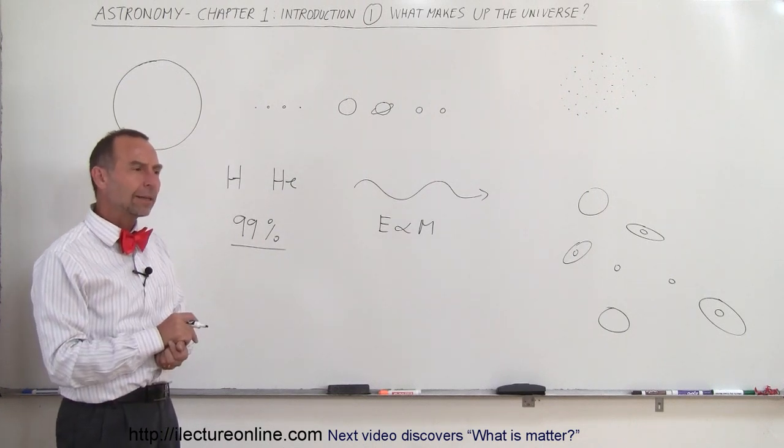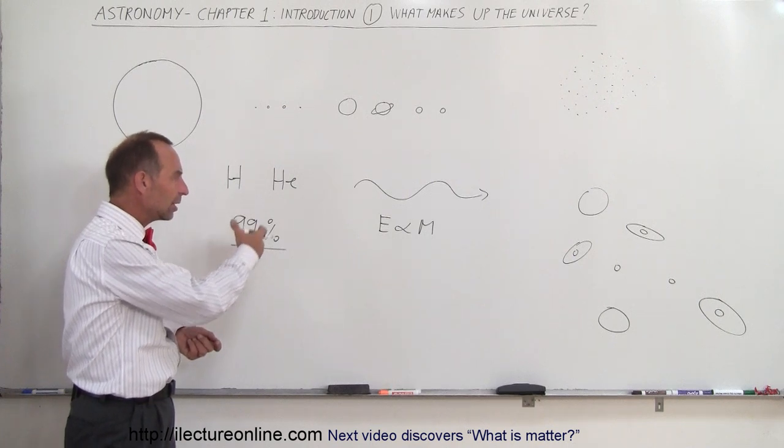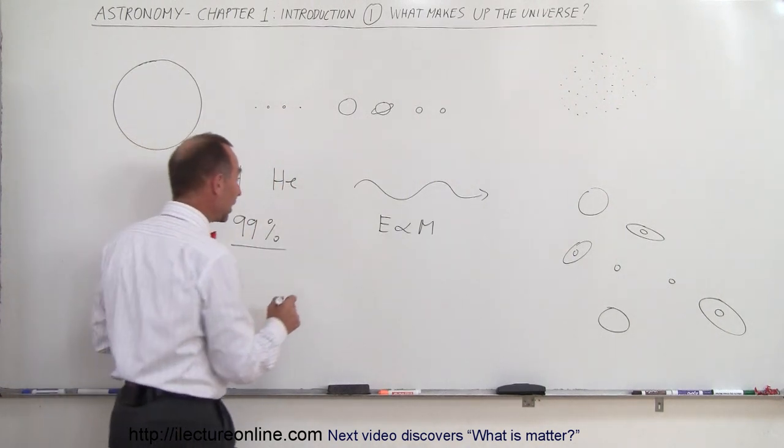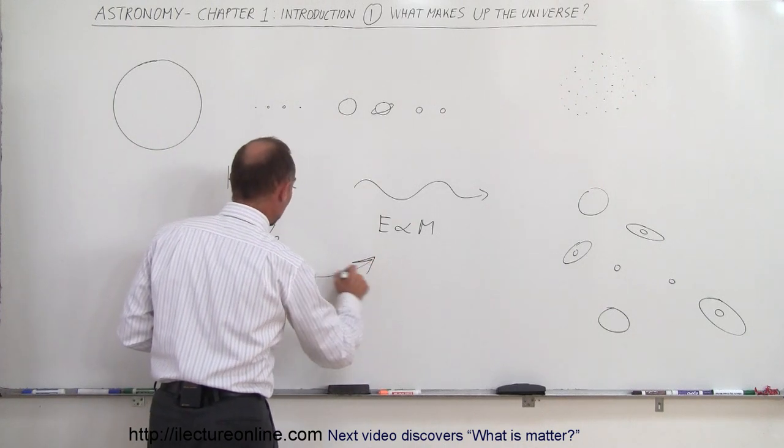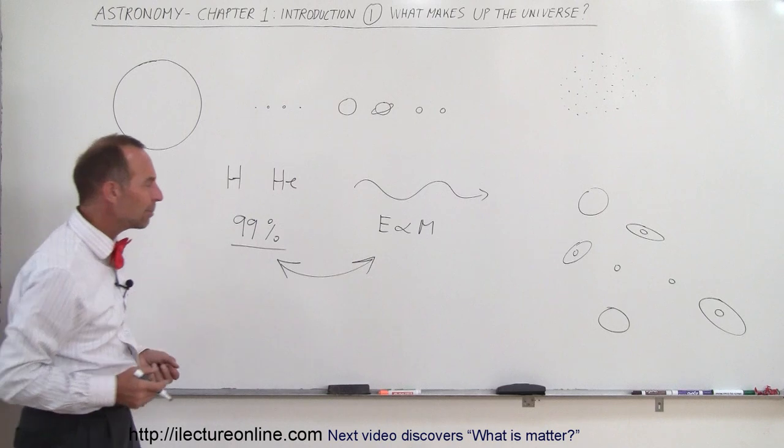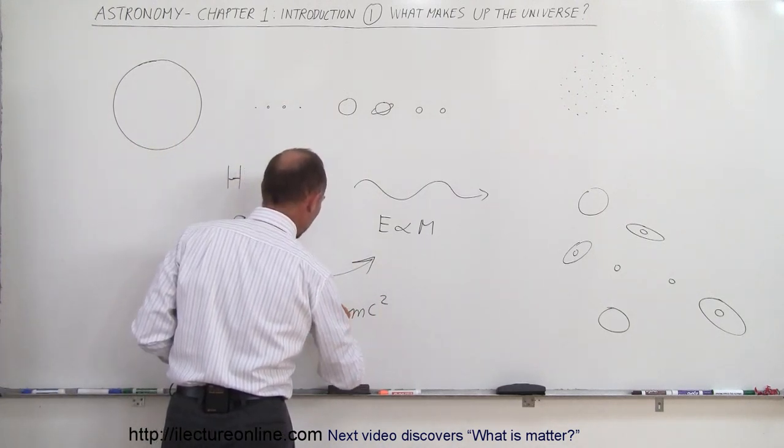How do we talk about the universe being made of hydrogen, helium, and electromagnetic radiation? Einstein was able to think about those two things as two different aspects of the very same thing. He came up with the equation E equals MC squared.